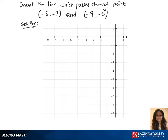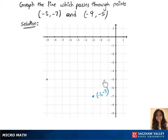Look for minus 3 comma 7 on the graph, which is right here, and write minus 3 and minus 7 there. Then look for the other point, which is minus 9 and minus 5. That's there — minus 9 and minus 5.